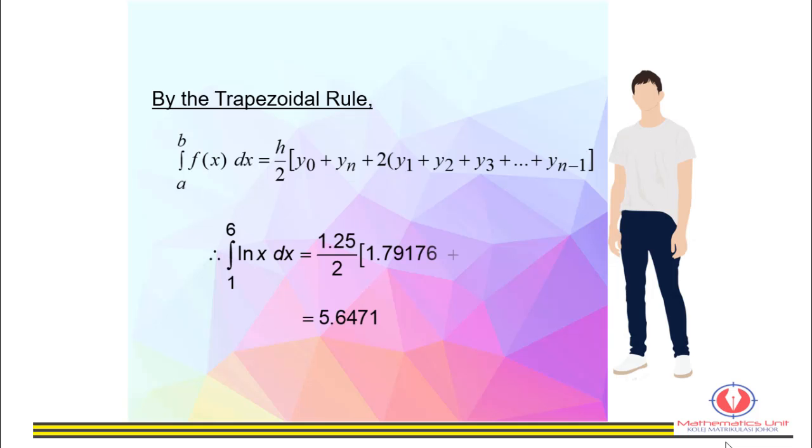Finally, substitute the values into the formula of the trapezoidal rule. The value of the definite integral is equal to 5.6471 correct to four decimal places.